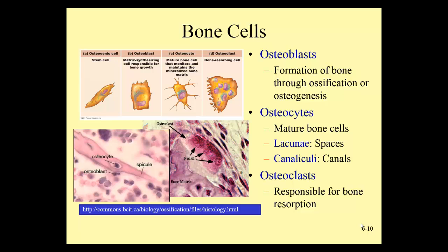We'll continue our video lecture of the skeletal system, picking up with slide number 10, looking at bone cells. We have several different types of cells that exist within bone tissue, and they have different functions. The first cell we see here is a stem cell. Stem cells are found on the outer periosteum of bone, and as bone is forming, these stem cells will differentiate into osteoblasts, which are what actively build bone.